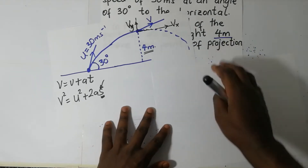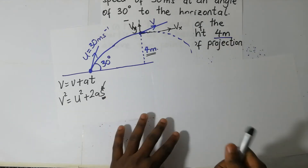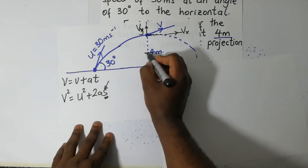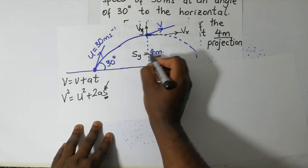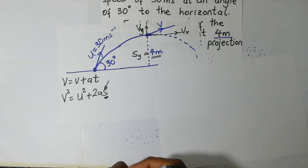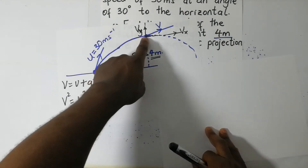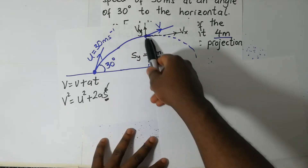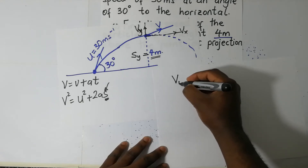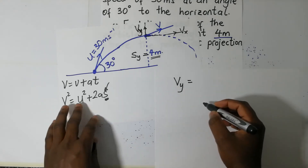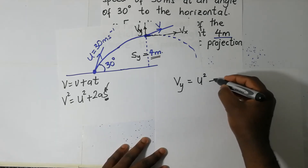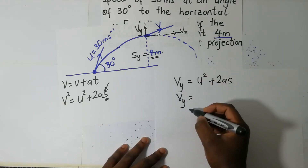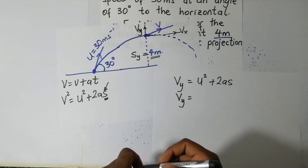From the information given in the question, when the particle is four meters above the point of projection, four meters is the displacement in the y direction. We need to find the final velocity at that point. We shall begin by finding the vertical component of that velocity, Vy. So Vy squared is equal to U squared plus two AS — where U is the initial velocity squared.